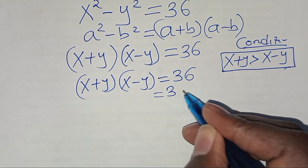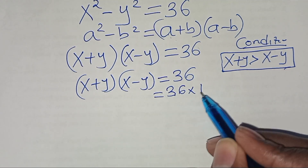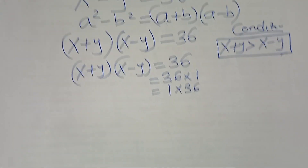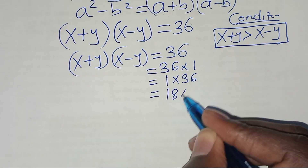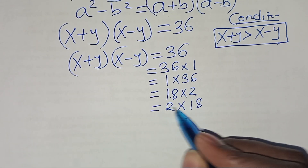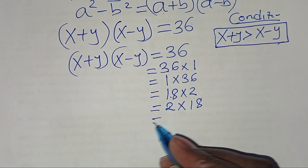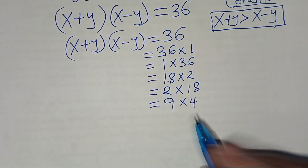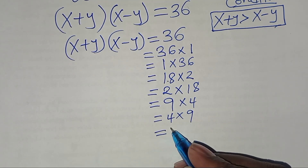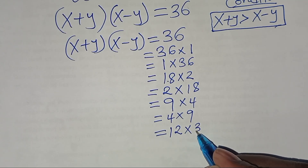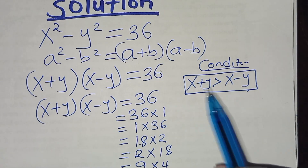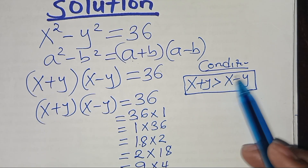The factor pairs of 36 are: 36 × 1, 1 × 36, 2 × 18, 18 × 2, 9 × 4, 4 × 9, 12 × 3, and 3 × 12.